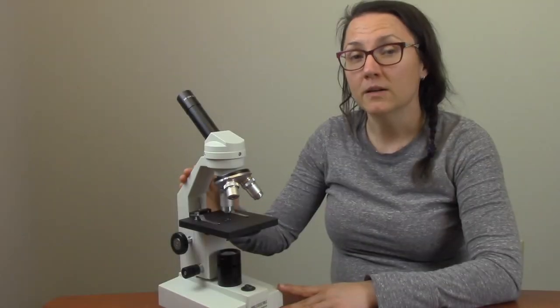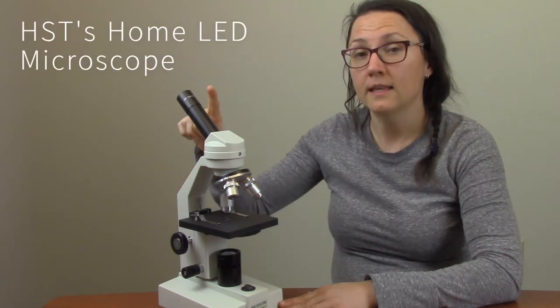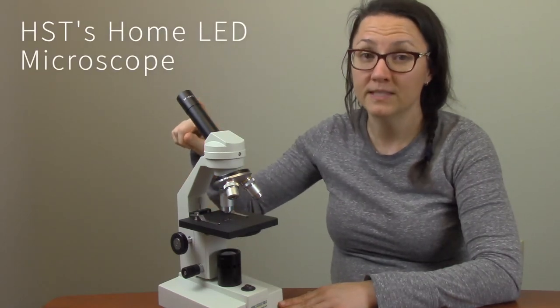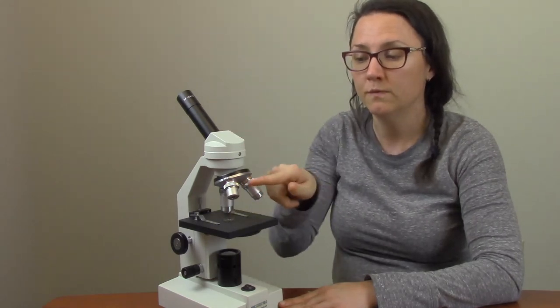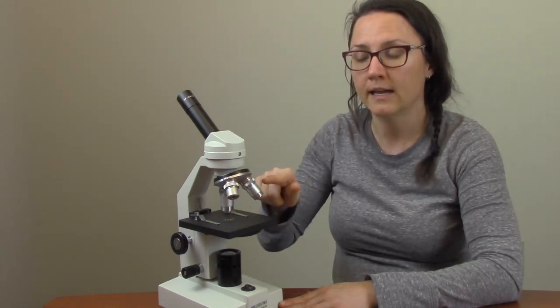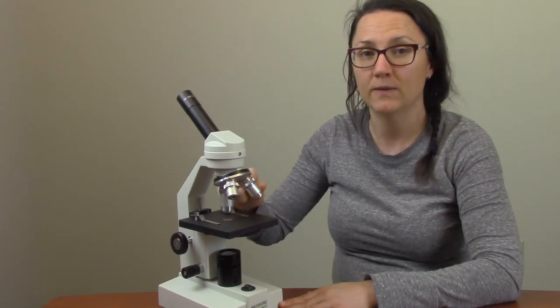With this model of microscope, we take the eyepiece magnification of 10x and we multiply it by each objective. So this microscope will do 40x, 100x, and 400x magnification. 400x magnification is the minimum necessary for high school level biology.